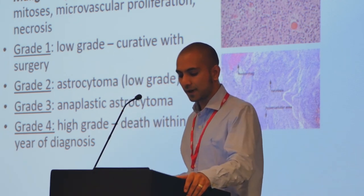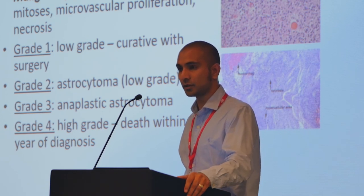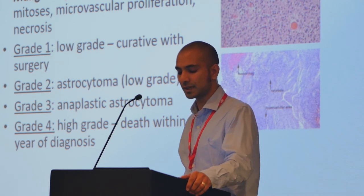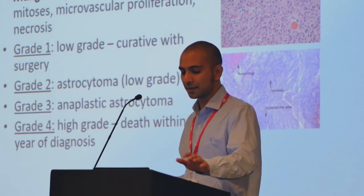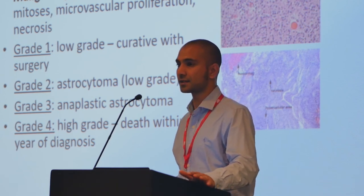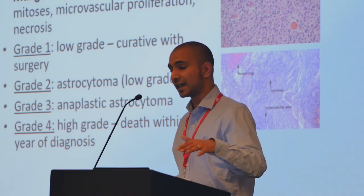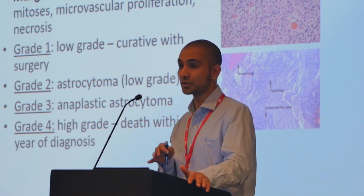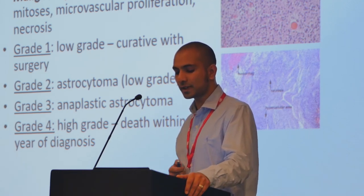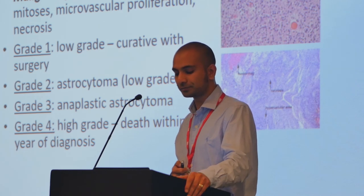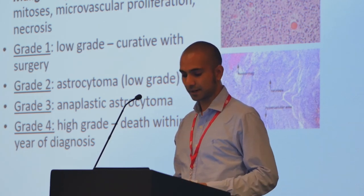So the four grades: grade one tumors are low-grade and tend to be curative in many cases with surgery alone. The grade two astrocytomas are also considered low-grade - I'm going to come to this in another slide because these are very enigmatic tumors that present one of the most difficult decisions. Grade three tumors are high-grade anaplastic astrocytomas. And the most malignant grade is grade four, which is glioblastoma, and the outcome can be pretty poor for these high-grade tumors.